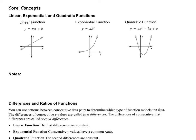A linear function looks like a line. An exponential function looks like an exponential function — remember that an exponential function never touches the x-axis, and it continues going up and gets exponentially bigger. And lastly, a quadratic function looks like a U-shape or a parabola.